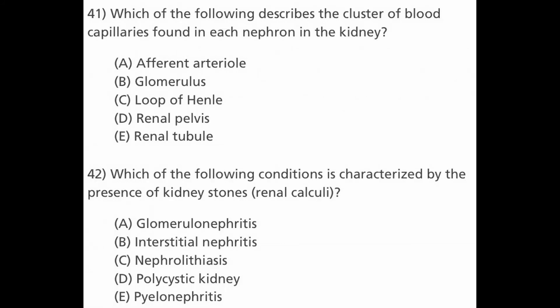Next question: which of the following describes the cluster of blood capillaries found in each nephron in the kidney? Options are A. Afferent arteriole, B. Glomerulus, C. Loop of Henle, D. Renal pelvis, and E. Renal tubule. The answer is B, glomerulus, which is the cluster of blood capillaries found in each nephron in the kidney.